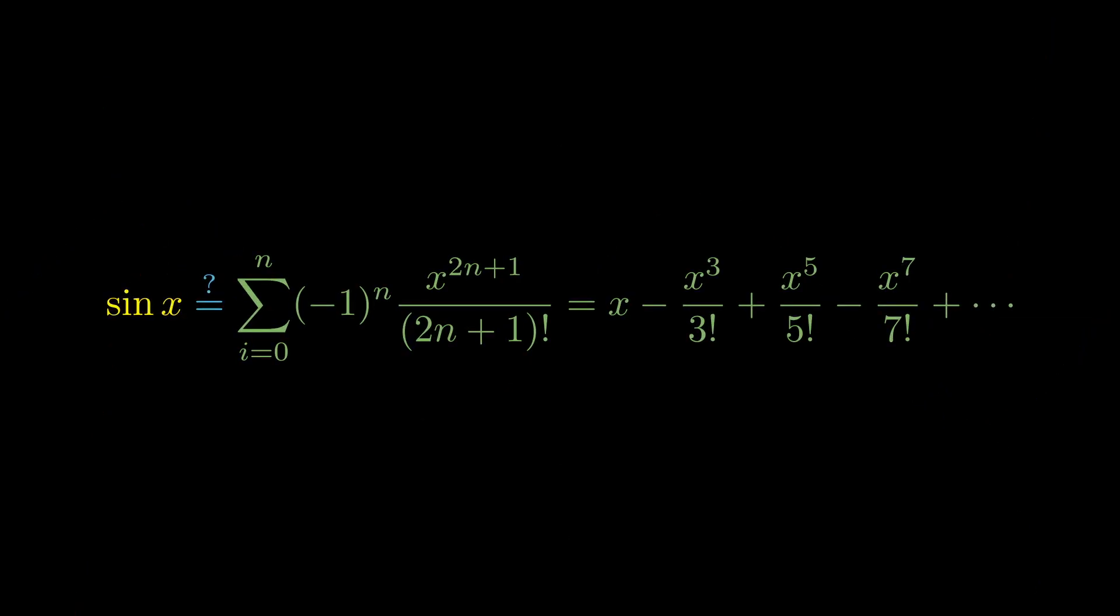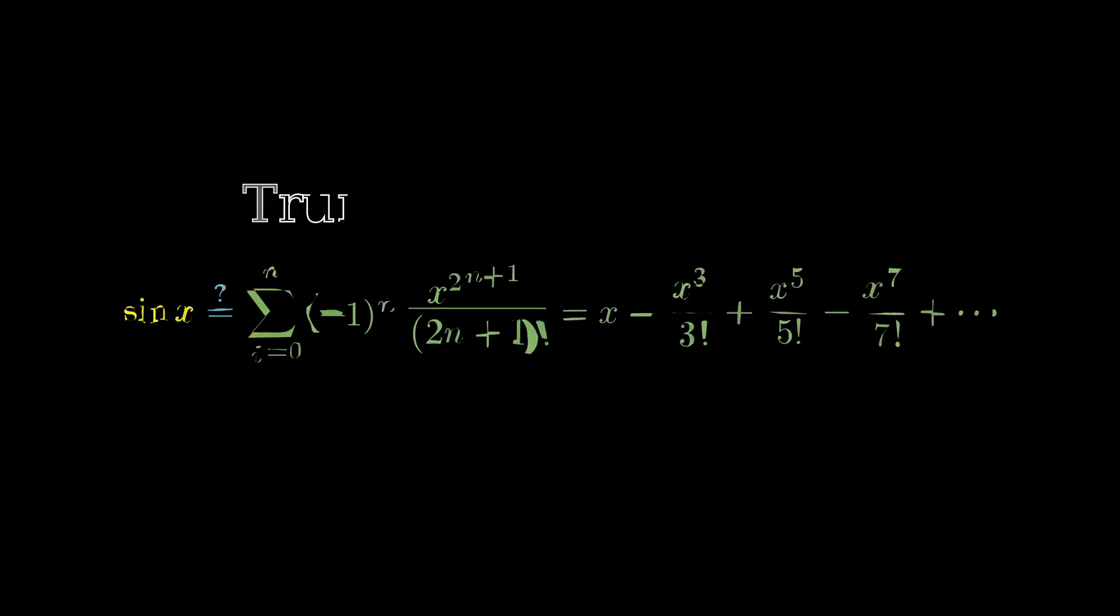So we have this infinitely long polynomial that we think might be equal to sine of x. As we add more and more terms, it certainly seems to approach the function, but we're not sure, and we definitely don't have anything close to a proof. As is common in mathematical problem solving, let's look at a small component first: the error term for a Taylor polynomial approximation.